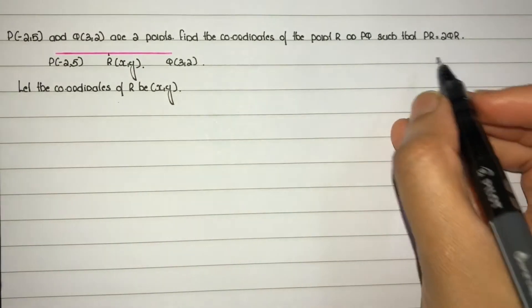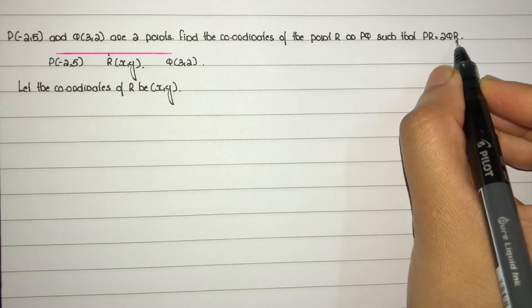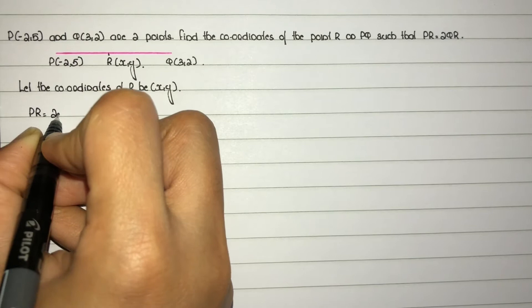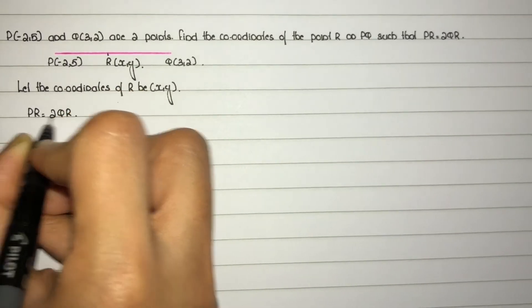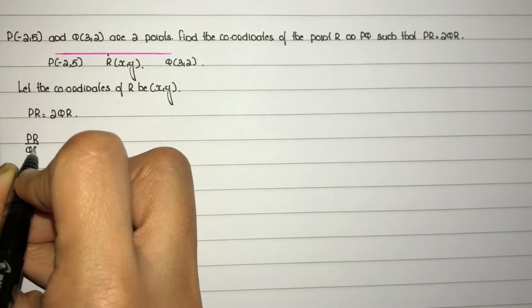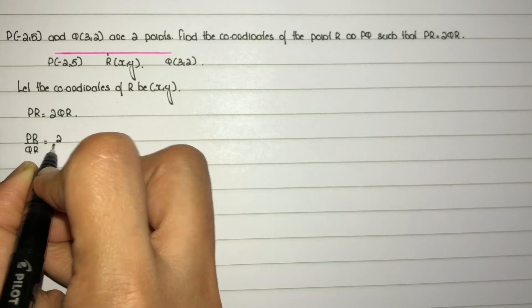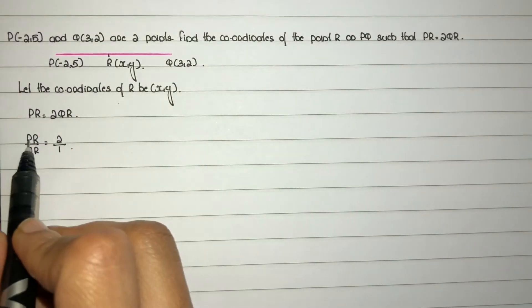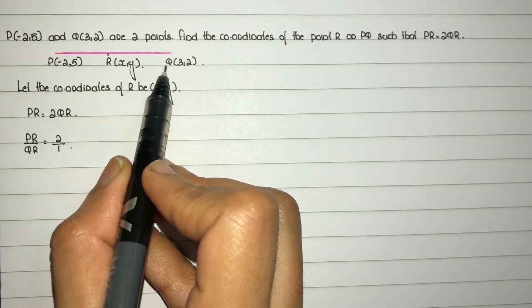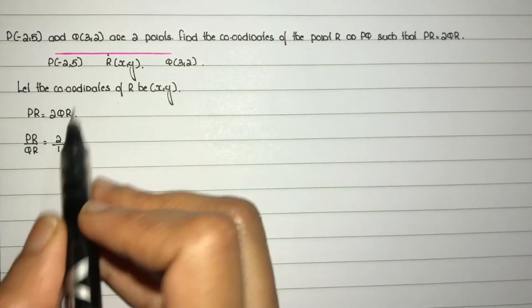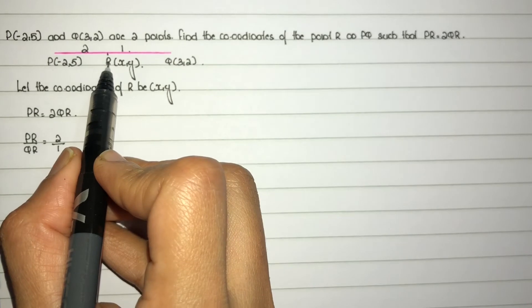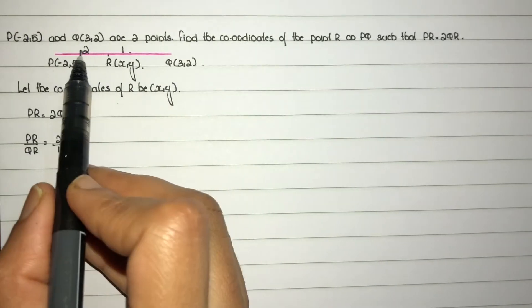Next, given that PR is equal to 2QR, so PR by QR is equal to 2, which equals 2 by 1. That means PR by RQ equals 2 by 1. This means R divides PQ in the ratio 2 is to 1.